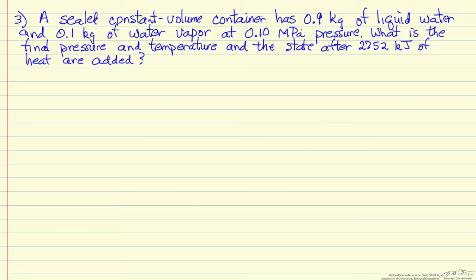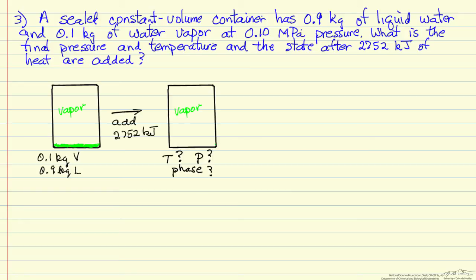So again, let's start with a diagram. I draw a diagram to represent the process. And we have 0.9 kg of liquid, but this liquid at the bottom of the container here does not take up a large fraction of the volume because of the dramatic difference in specific volume between the vapor and the liquid. We finish, I am guessing we have a vapor. We don't know for sure until we solve the problem.